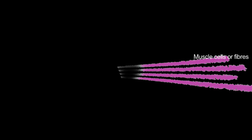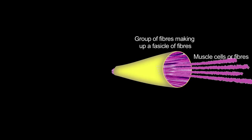We will begin with skeletal muscle. All skeletal muscle has the same basic structure, starting with the muscle cells, also referred to as muscle fibres. These are grouped into fascicles, and the fascicles in turn are grouped together to form the muscle mass.